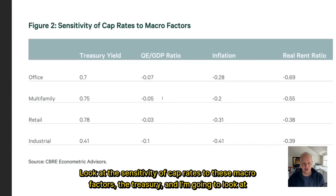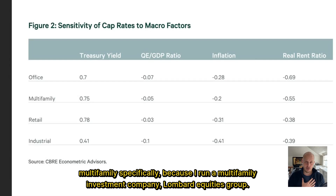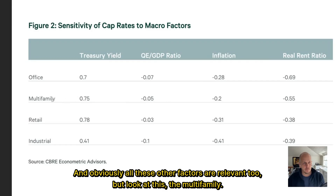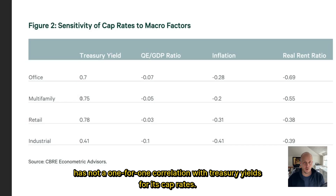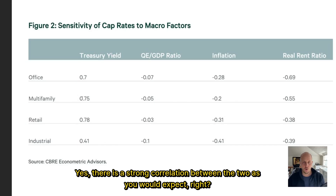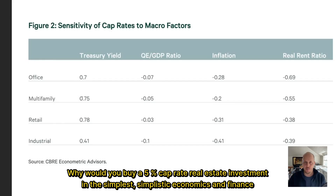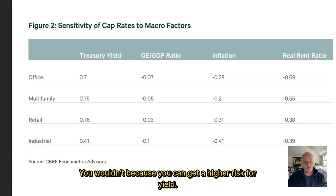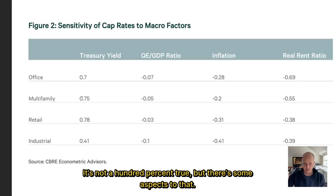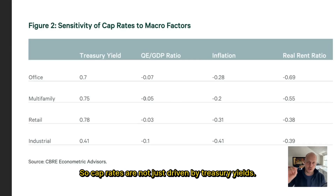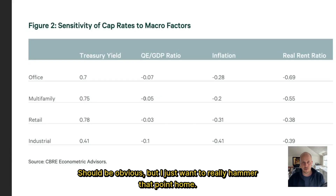Look at the sensitivity of cap rates to these macro factors. I'm going to look at multifamily specifically because I run a multifamily investment company, Lombard Equities Group. Multifamily does not have a one-for-one correlation with treasury yields for its cap rates. Yes, there is a strong correlation between the two — if you can get a 10% yield on a treasury bond, why would you buy a 5% cap rate real estate investment? But it's not 100% true. Cap rates are not just driven by treasury yields — that should be obvious, but I want to really hammer that point home.